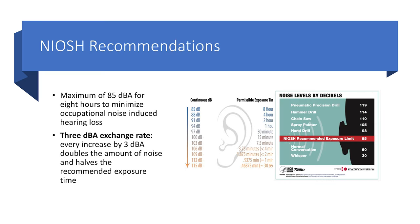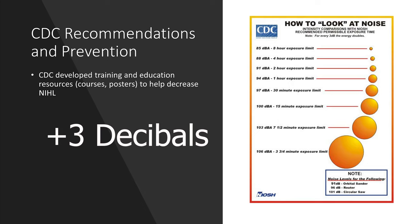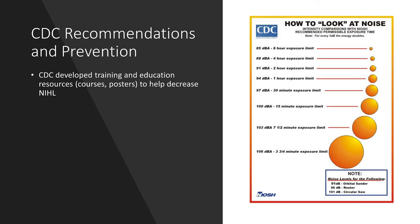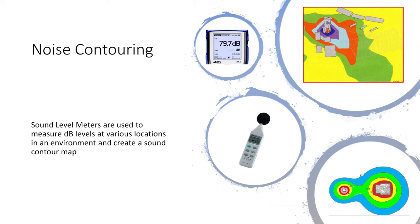For work-related purposes, NIOSH recommends a limit of 85 decibels for eight hours to minimize occupational noise-induced hearing loss. These recommendations use the weighted decibel scale, which applies weightings based on the associated phon curve. NIOSH also recommends a three-decibel exchange rate, so that every increase of three decibels doubles the noise dose and halves the recommended exposure time. Noise contouring involves using sound level meters to measure decibel levels at various locations in an environment and create a sound contour map, helping identify safer areas versus higher-risk zones.